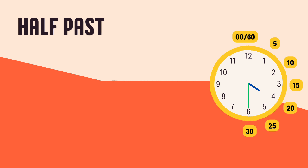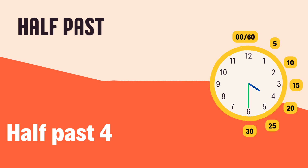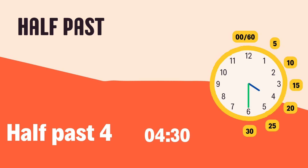Let's understand half past. When the minute hand is on six, it means 30 minutes have passed after the hour. For example, if the hour hand is on four and the minute hand is on six, the time is half past four, or we can say 4:30.